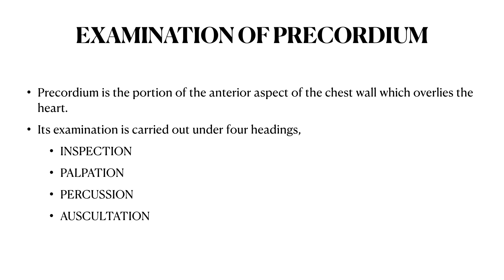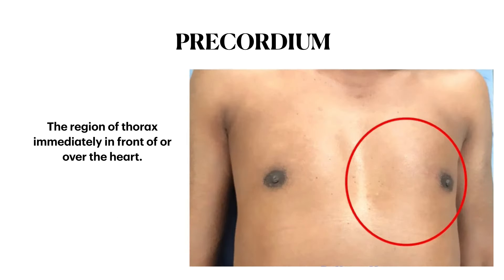What is Precordium? Precordium is the portion of anterior aspect of the chest wall which overlies the heart. We will examine our Precordium in four steps: the first one is inspection, second one is palpation, third one is percussion, and fourth one is auscultation. The region of thorax immediately in front of or over the heart is called Precordium.